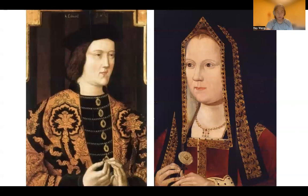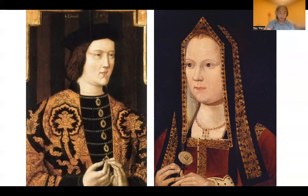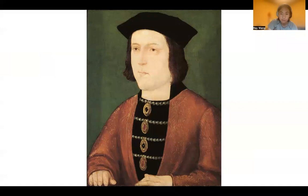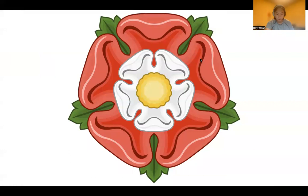Henry VII became king and married Elizabeth of York on the 18th of January, 1486. Elizabeth of York was a descendant of Edward IV and part of the House of York, thus uniting both the House of Lancaster and the House of York — the two original sides of the War of the Roses. The royal emblem was also changed, combining the red from Lancaster and the white from York, showing that the House of Tudor was an alignment of both.